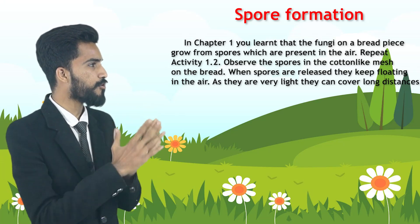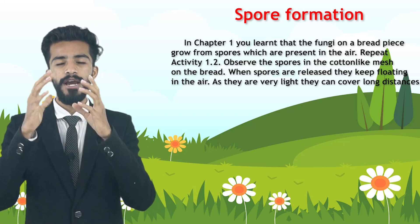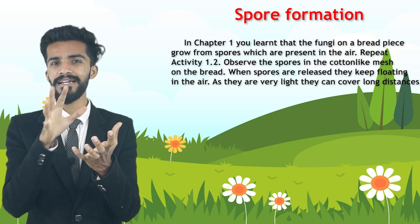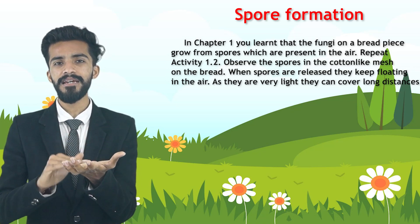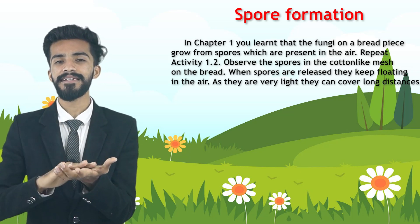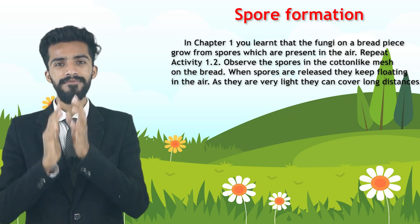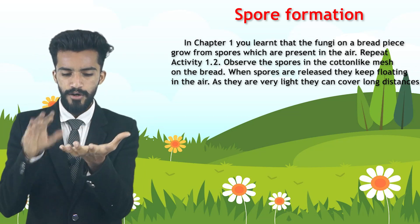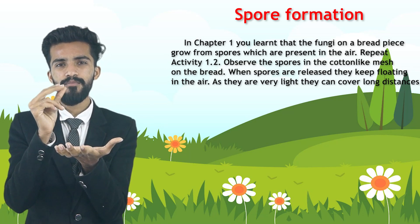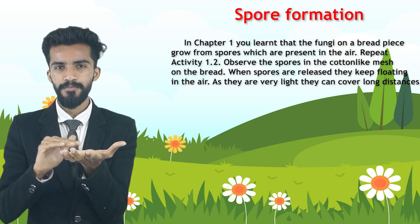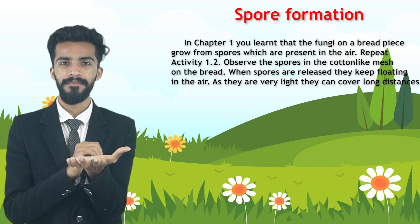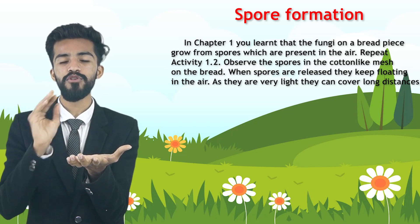Now we repeat activity 1.2 — observe the spores in the cotton-like mess on the bread. In this activity you had taken a bread, placed it in a slightly damp place, and after a few days you could see some white patches on it. Here I have shown a bread — you can see a white cotton-like, rui-like growth on the bread, which is the spores of the fungus.